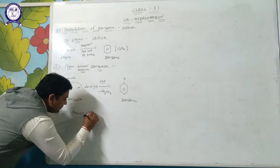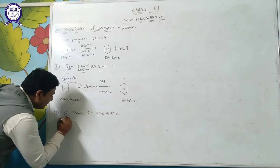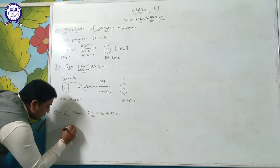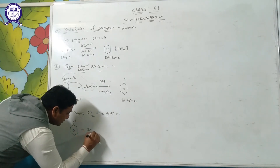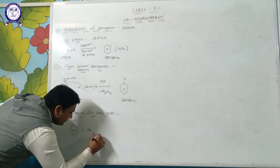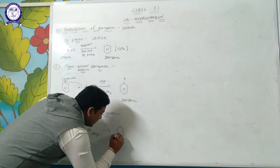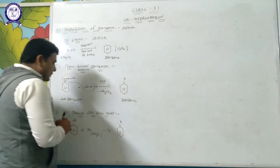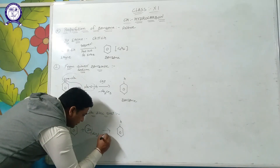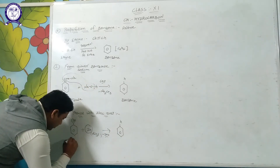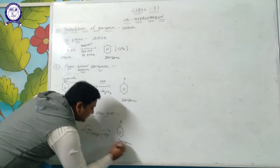Third method: phenol with zinc dust. When phenol reacts with zinc dust, it gives the formation of benzene and releases ZnO (zinc oxide). So phenol is converted to benzene.